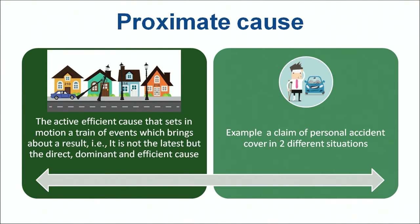For example, a person suffers an accident, is lying on the ground in the cold, catches pneumonia, and dies. Under personal accident cover, he will be paid a claim because the prime cause of his death was the accident. However, if the person suffers an accident, goes to the hospital, catches an infection there, and dies — the personal accident cover will not apply, because the cause of death was not the accident but the hospital infection. The prime or dominant cause is the decision factor for giving a claim.